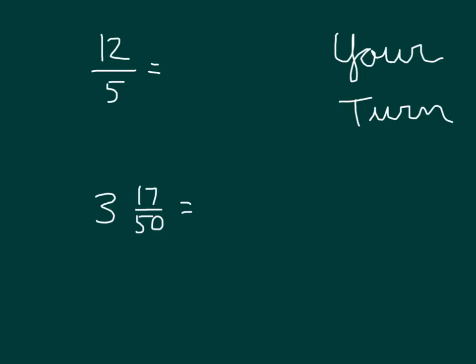Here are two of them for you to try. You have twelve-fifths is equal to, and the other one is three and seventeen-fiftieths is equal to. Please write decimal equivalents for each while showing your work. Twelve-fifths you could have multiplied by two over two to be able to get twenty-four over ten. That's twenty-four tenths, which is also written as two point four.